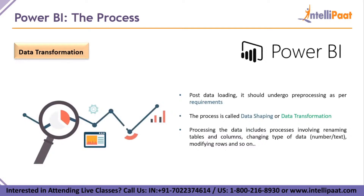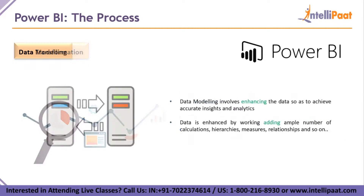Coming to data transformation, which is the second step. After data loading, your data will be very unruly, very shabby, very raw — there's a good chance it will not be structured. So we do this step called pre-processing, also known as data shaping or data transformation. We do a lot of changes and transformations in the data so that the next steps become very easy and maintain very good accuracy. You can rename your columns, rename your tables, change the type of data — converting text to numbers or numbers to text — modify rows and columns, and modify data within each cell of the two-dimensional matrix. Data transformation plays a very vital role as the second step toward achieving good visualization.